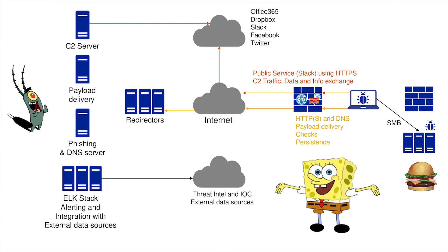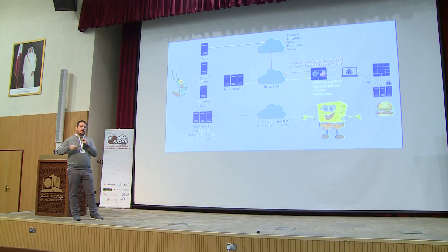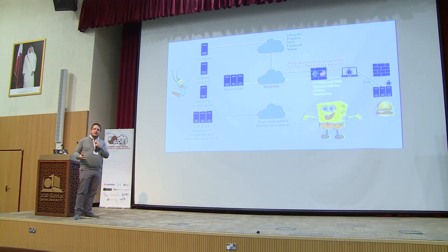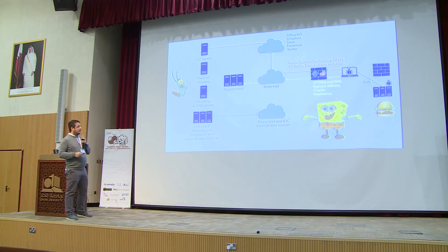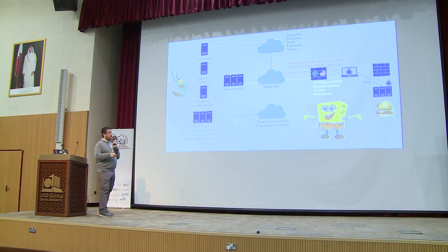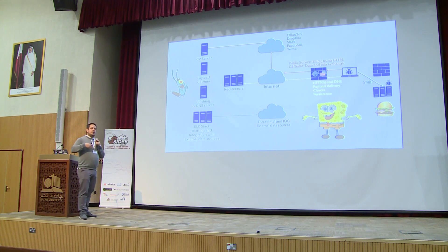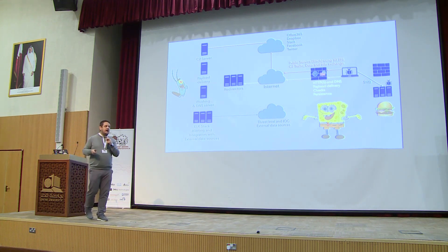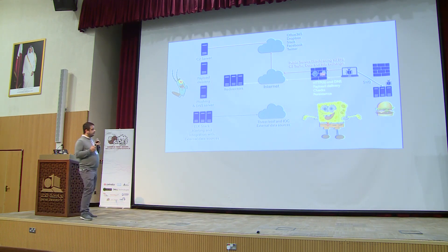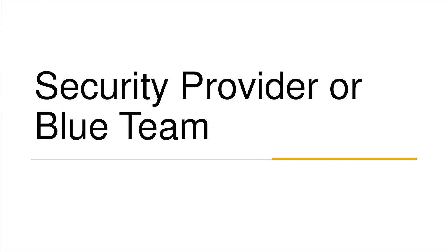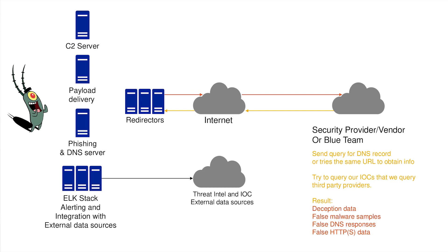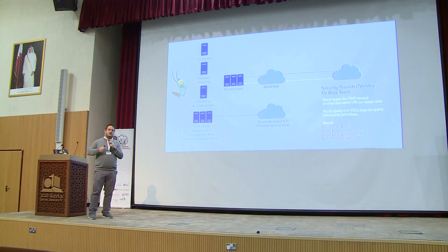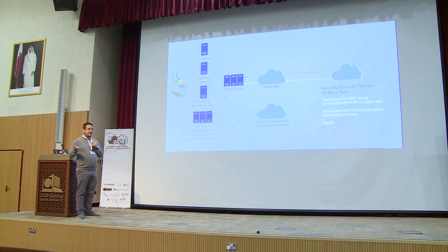We used Slack to send C2 information outside — Slack is allowed on their layer 7 firewall. We used SMB to access the back-end data center and extracted the data. They didn't see anything irregular in their environment. We didn't use a custom HTTP page or custom protocol — we used a protocol and an application that were allowed in the network. We could have done similarly with Teams, Skype for Business, SharePoint, OneDrive. Throughout every move we monitored threat intelligence: did they upload anything to VirusTotal, did IBM access our website, did any other vendor access our redirectors? At the end, we had long-term persistence for about five months. The security provider saw nothing — everything was normal. We served them deception data, fake content, false DNS responses, false HTTPS data.